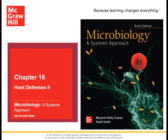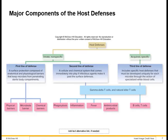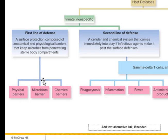In Chapter 15, we'll first review Chapter 14 with a slide from the beginning of that chapter showing an overview of the immune system. Host defenses are divided into the innate non-specific and the acquired specific immunity. The first line of defense consists of barriers — physical, chemical, and microbial barriers.